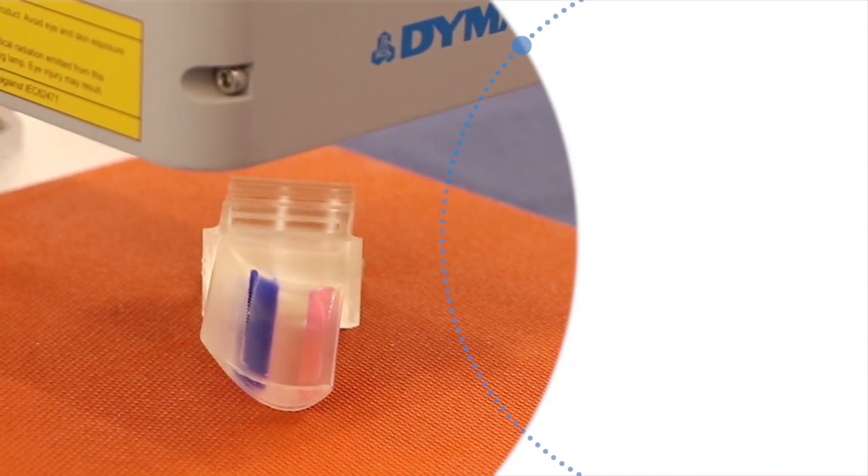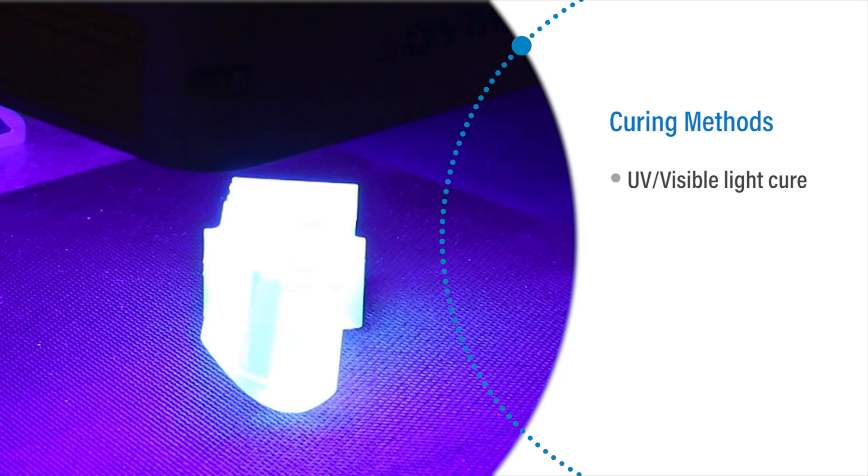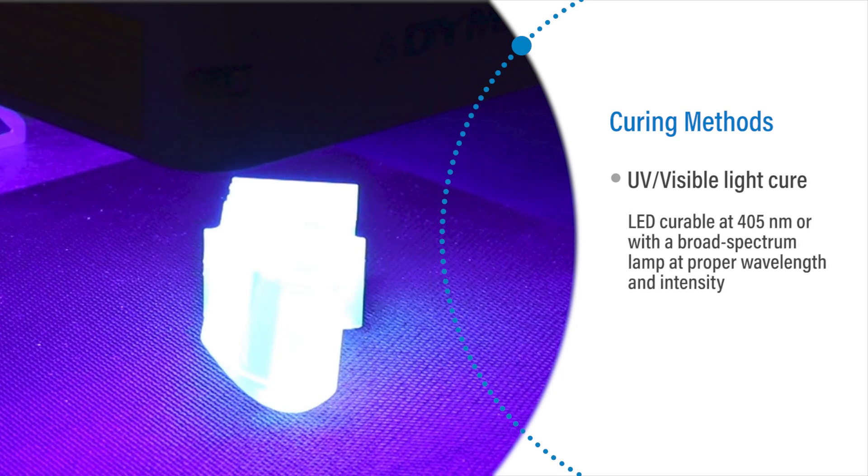After the holes and cavities are filled, the component is cured with UV visible light. The product is LED curable at 405 nanometers, or with a broad spectrum curing lamp at the proper wavelength and intensity.